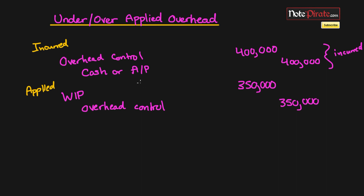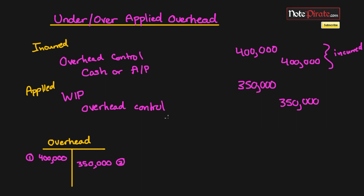If you have questions about how we debited or credited these accounts, you can go back to that journal entries tutorial. Looking at a T-account for the overhead control account, the first entry is a $400,000 debit, and the second entry is a $350,000 credit, which means we have a balance of $50,000 on the debit side. Since our estimate is lower than our actuals, that means we're going to have an under applied amount of overhead.